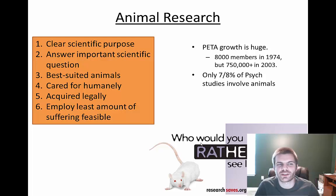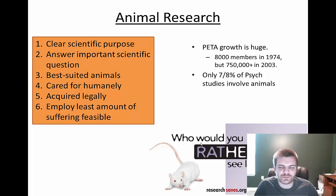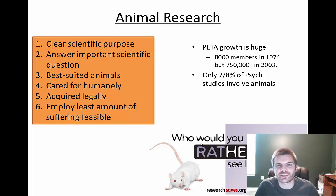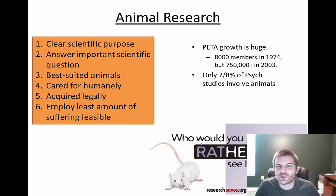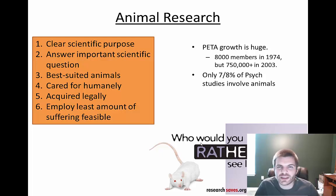First, animals need to have a clear scientific purpose and the research needs to answer an important scientific question. When you're researching on animals, the purpose of your experiment needs to be very obvious. If it just looks like you're torturing animals for the sake of maybe learning something, that's not showing a clear scientific purpose. Likewise, if you are answering a question that has already been answered or won't further the subject matter, you're probably not contributing anything of value — so that should not be approved.